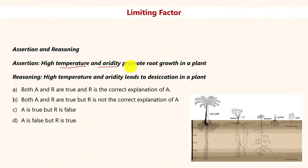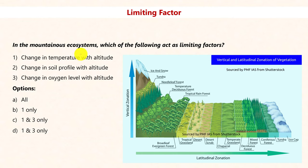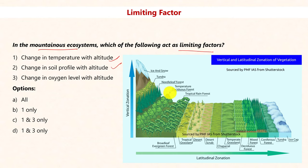High temperature and aridity provoke root growth in a plant because they lead to desiccation — loss of water through evapotranspiration. As a result, roots penetrate deep into the soil in search of water and nutrients. Both statements are true and the answer is A. In a mountainous ecosystem, limiting factors include: decrease in soil fertility with height, change in soil structure, and decrease in oxygen levels with altitude — since humans and other organisms cannot survive in low-oxygen environments at high altitude. The answer includes all three options.